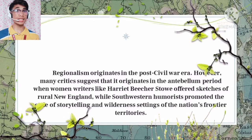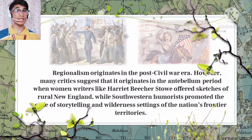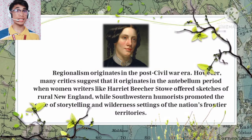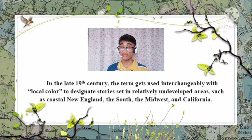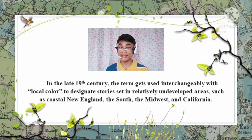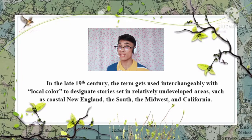Regionalism originates in the post-Civil War era; however, many critics suggest it originates in the antebellum period, when women writers like Harriet Beecher Stowe offered sketches of rural New England, while southwestern humorists promoted storytelling and wilderness settings of the nation's frontier territories. In the late 19th century, the term was used interchangeably with local color to designate stories set in relatively undeveloped areas such as coastal New England, the South, the Midwest, and California.